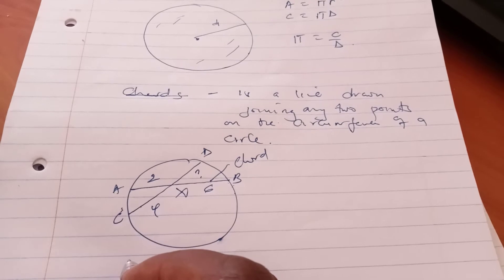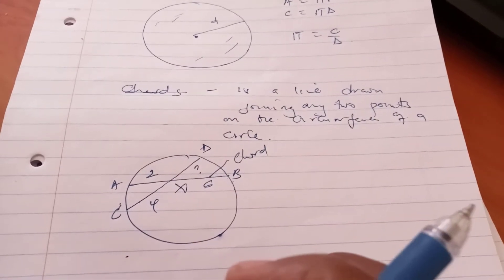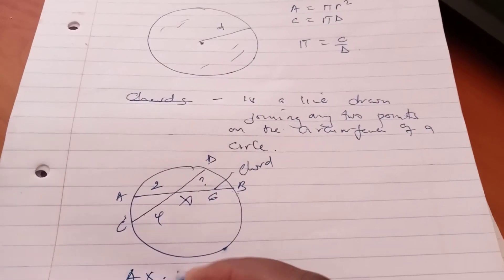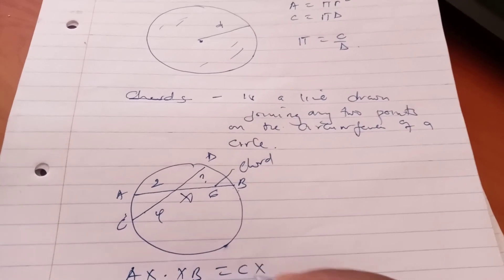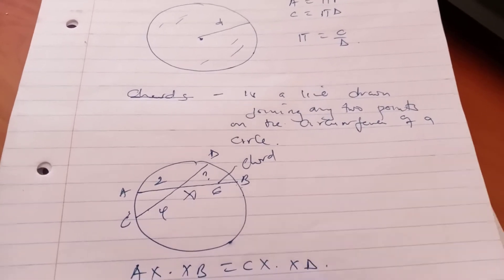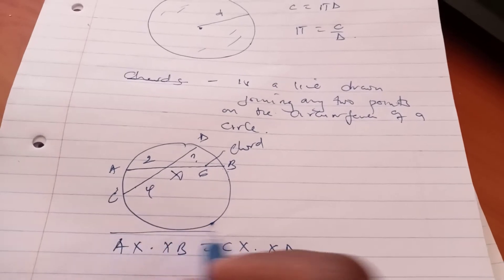Actually, there is a formula that we use. If chords intersect internally, then we say that AX times XB equals CX times XD. That's the formula that we use.